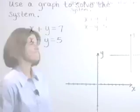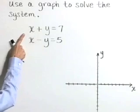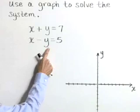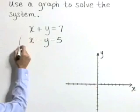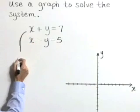Use a graph to solve the system. X plus Y is equal to seven. X minus Y is equal to five. Well, let's graph each of these lines, and I'm going to use the T-table to do so, starting with our first line.